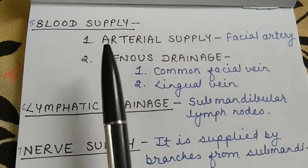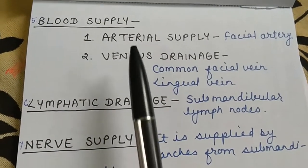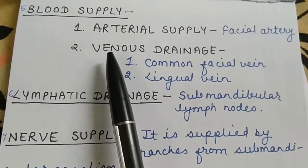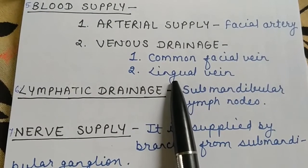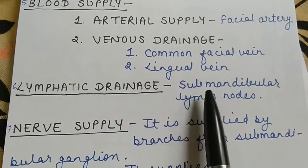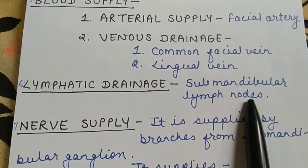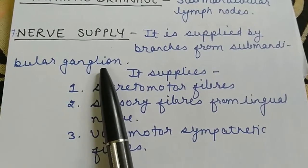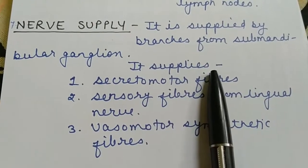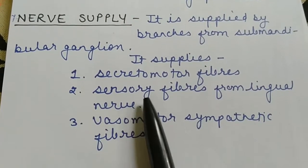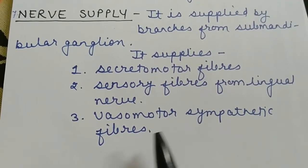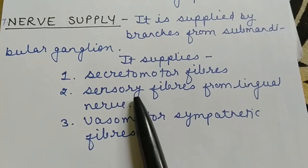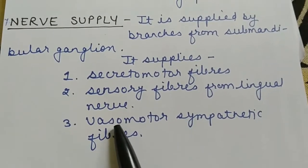Blood supply: arterial supply is from the facial artery. Venous drainage is into the common facial vein and lingual vein. Lymphatic drainage is into the submandibular lymph nodes. Nerve supply: it is supplied by branches from the submandibular ganglion, which provides secretomotor fibers, sensory fibers through the lingual nerve, and vasomotor sympathetic fibers.